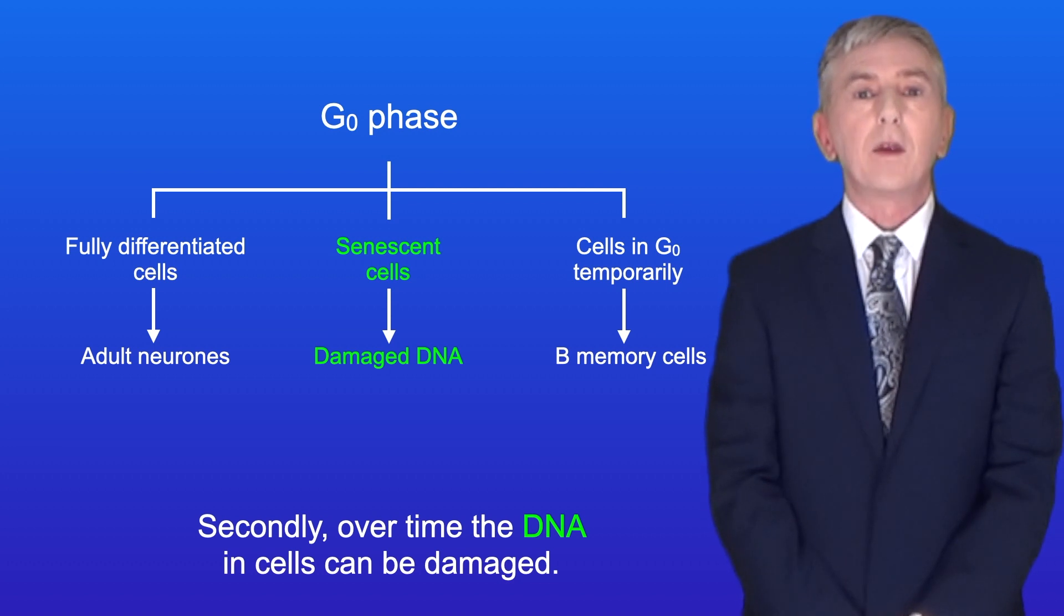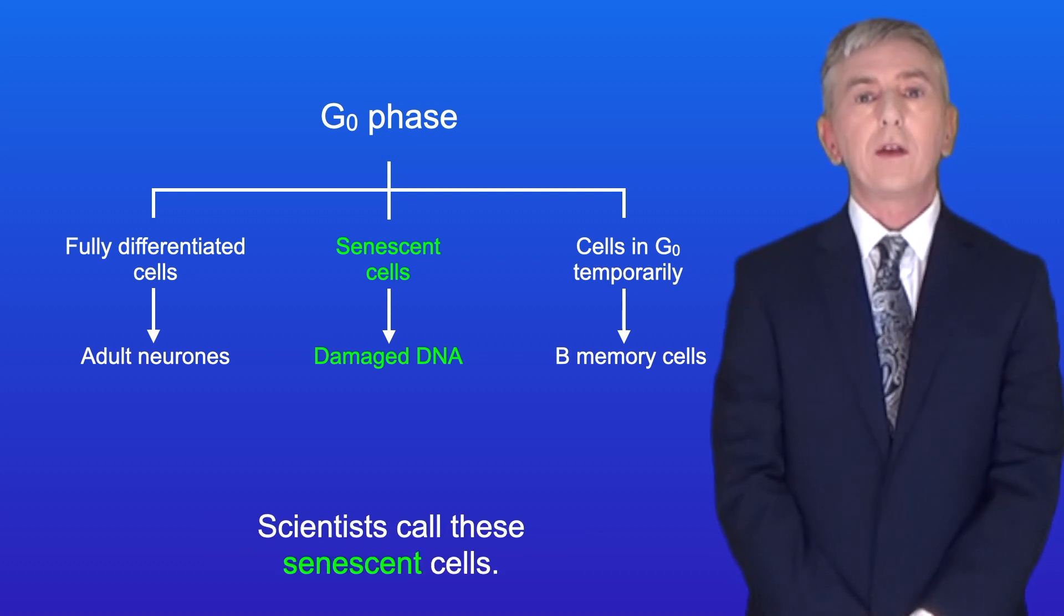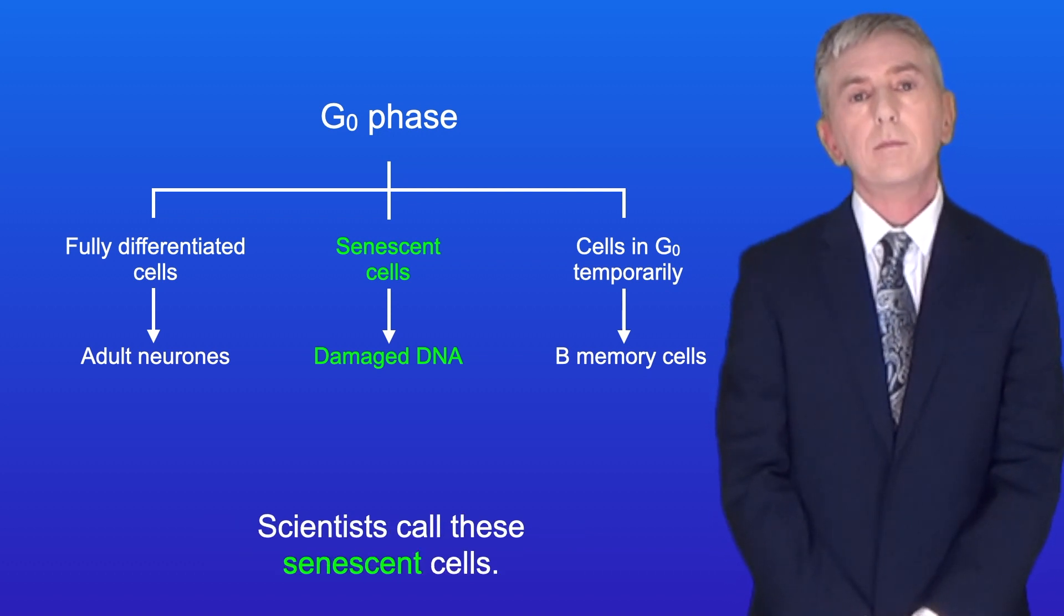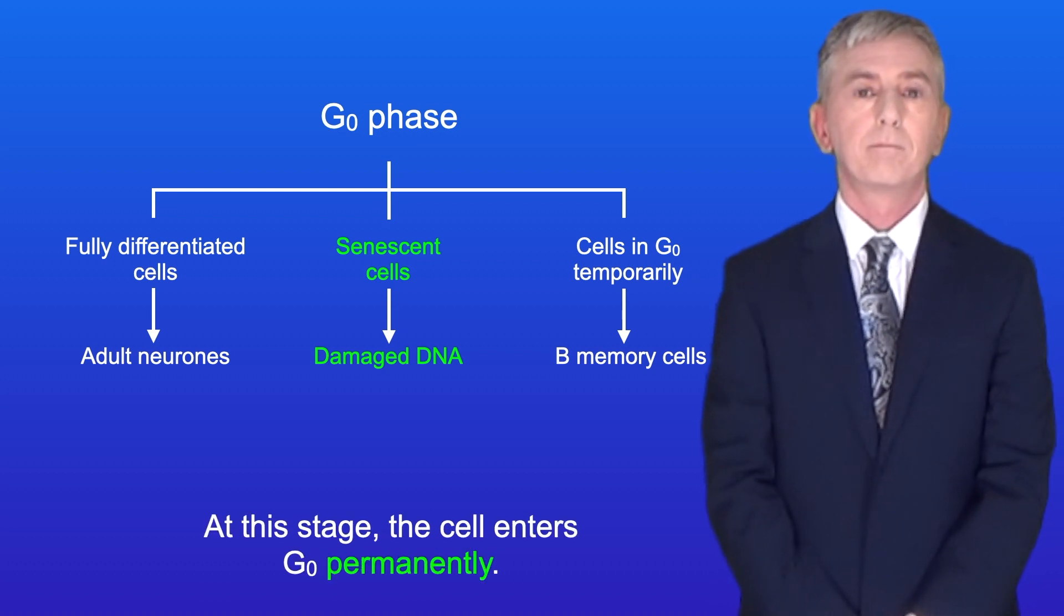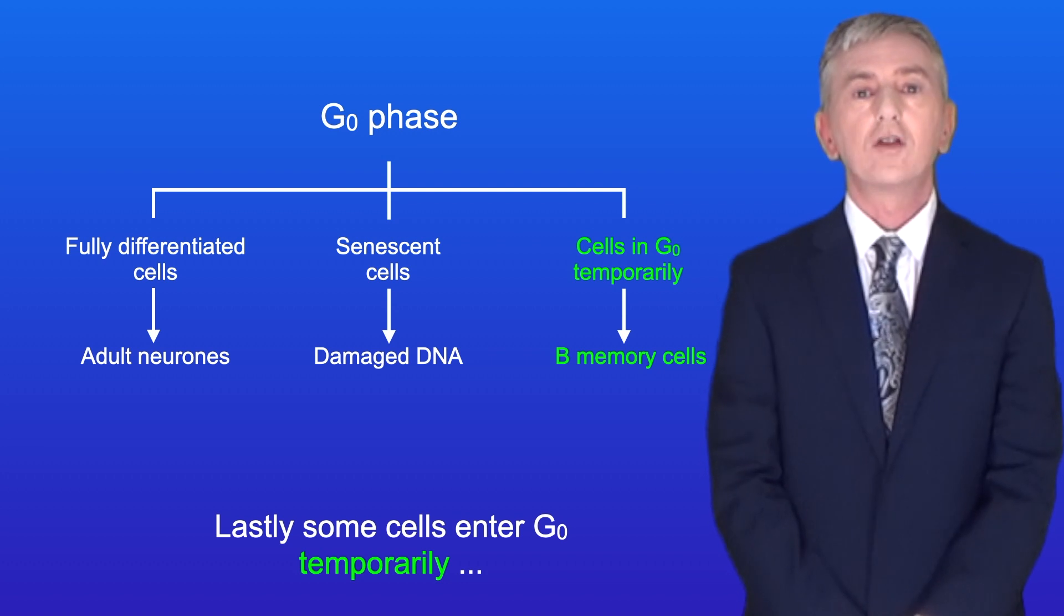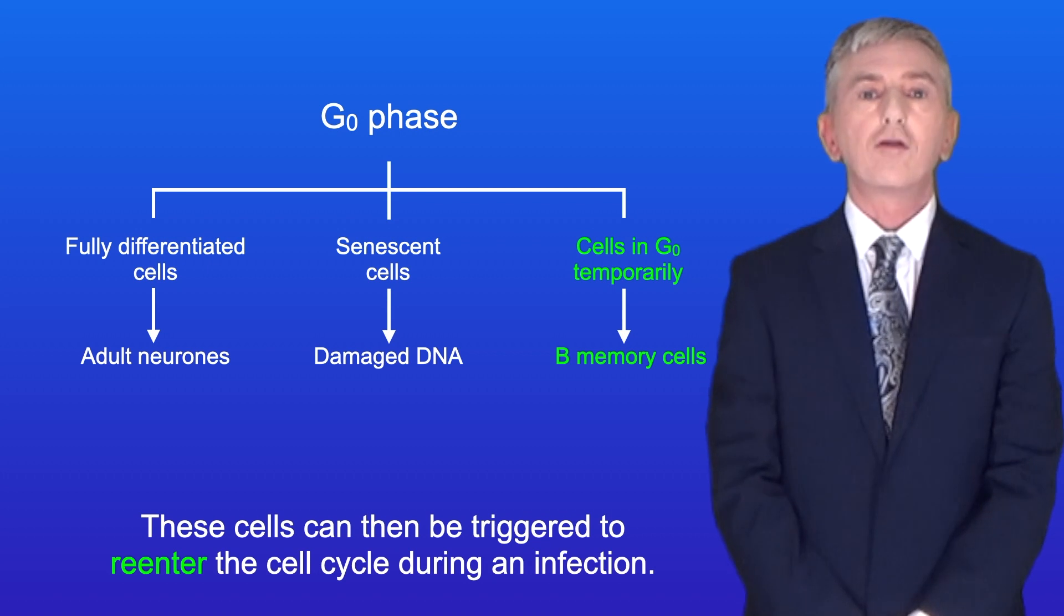Secondly, over time the DNA in cells can be damaged and at a certain point the cell will no longer be able to divide. Scientists call these senescent cells. At this stage the cell enters G0 permanently. Lastly, some cells enter G0 temporarily, for example B memory cells. These cells can then be triggered to re-enter the cell cycle during an infection.